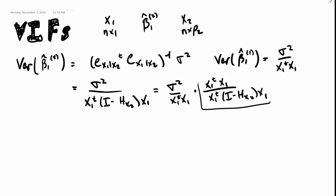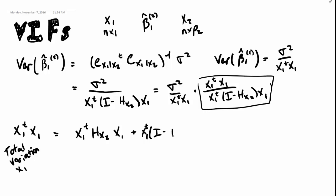Now, let's look at this term right here a little bit. Recall, if X1 has been centered, then X1 transpose X1 is the total variation in my covariate X1. And remember that total variation can get decomposed into regression variation, that's X1 transpose HX2 X1, plus residual variation, X1 transpose I minus HX2 X1.